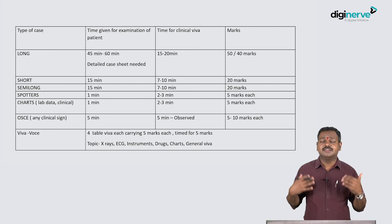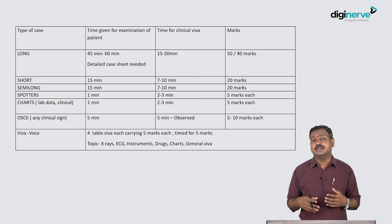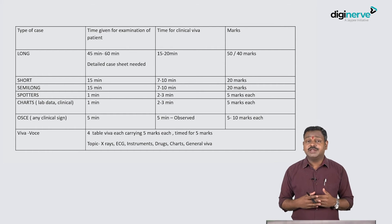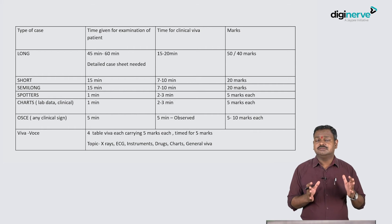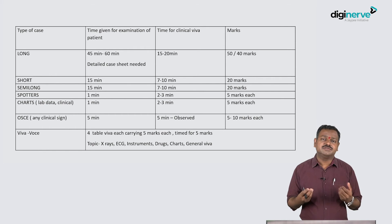OSCE is the best way to remove examiner bias because a checklist ensures objectivity. With the CBME curriculum progressing, OSCE will become the mainstay of assessment - especially after internship when OSCEs will be of paramount importance. Spotters commonly feature skin diseases, clubbing, or cyanosis, with questions asked afterwards. In viva OSCE it is important to be familiar with drugs, X-rays, ECGs, and instruments commonly used - know basic points about each of them.